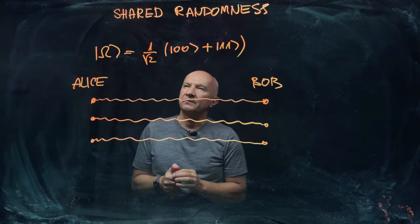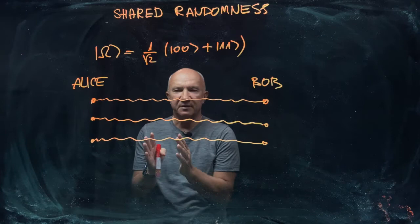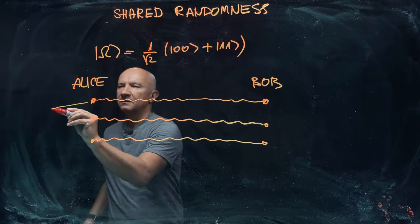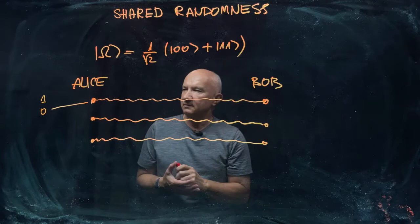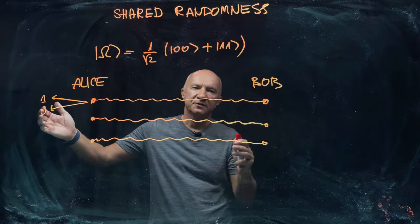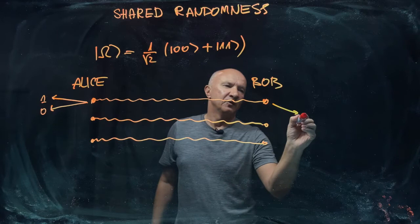Suppose Alice performs a measurement trying to learn whether her qubit is in state zero or one. So she performs the measurement in the computational basis. When she finds zero, she knows immediately, so to speak, that Bob, whenever Bob measures this state, will find zero.